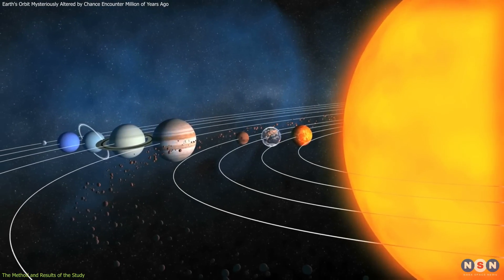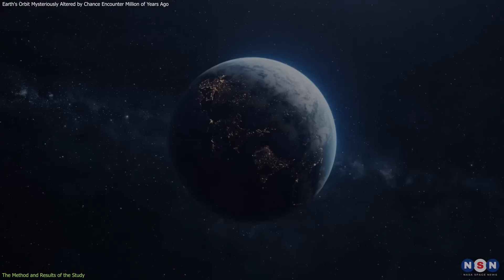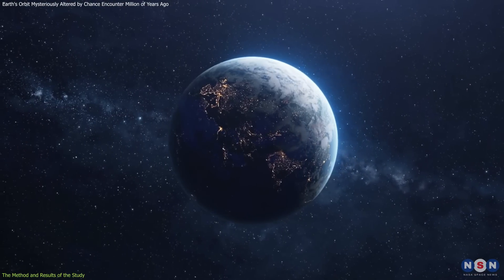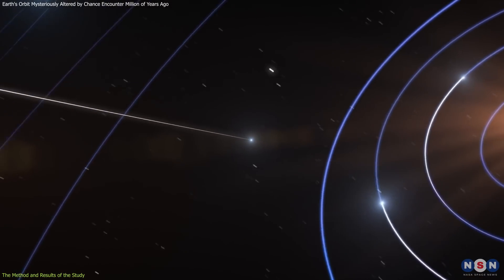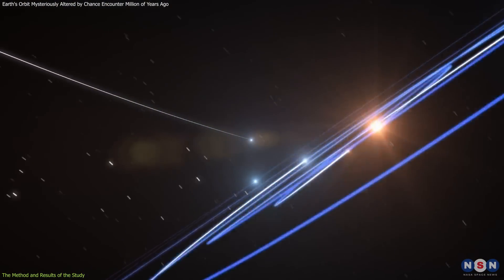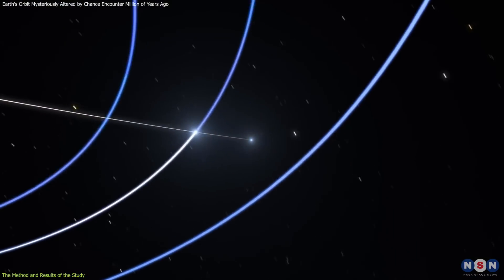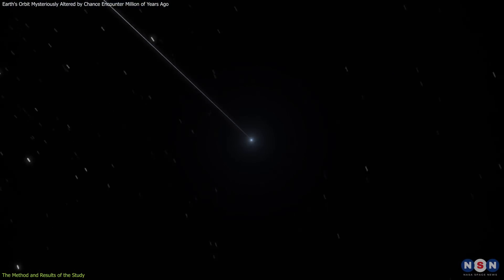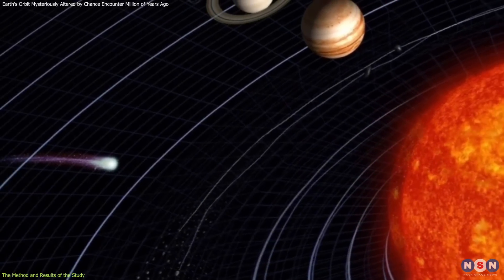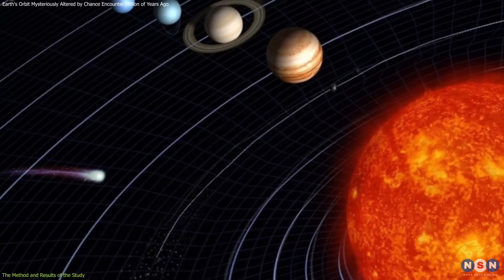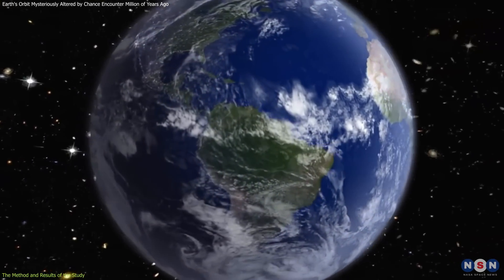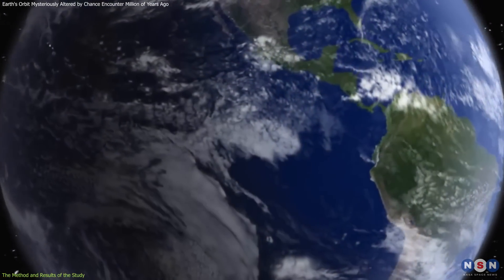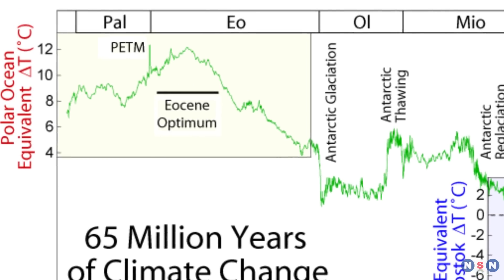These changes could then propagate to the inner planets, such as Earth, through gravitational interactions. The researchers estimated that the probability of such a starry encounter happening in the last 100 million years was about 1 in 10,000. They also found that the orbital changes induced by a passing star could last for millions of years, and could explain the observed variations in Earth's eccentricity and inclination at the time of the PETM.